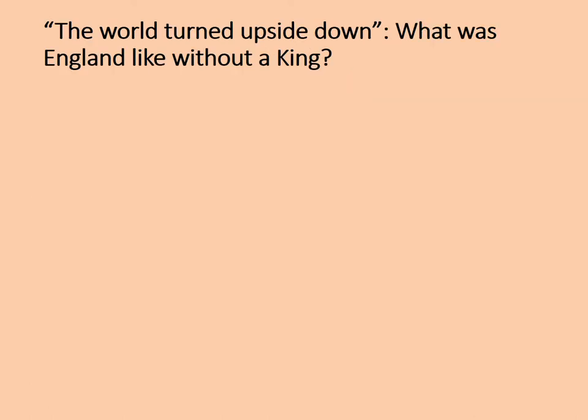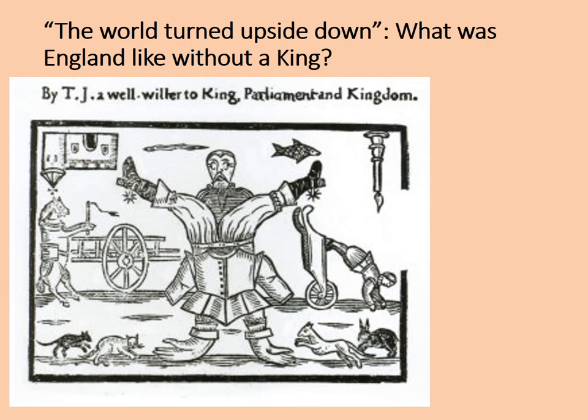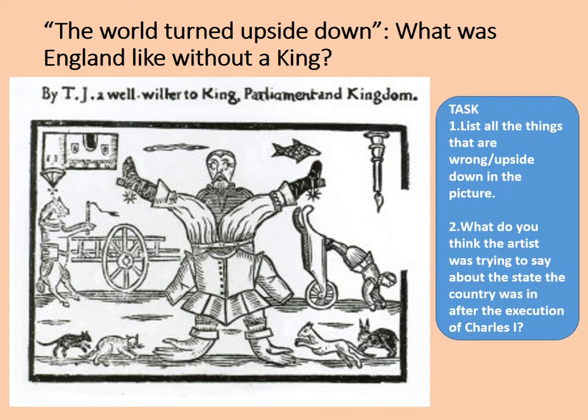We're going to look at one of my favourite historical sources: it's known as The World Turned Upside Down. What was England like without a king? For some people, when Charles I was executed and Cromwell and Parliament were increasing their power, it was as if the entire world had completely transformed. This woodcut cartoon was produced in these years, trying to communicate just how crazy things appeared. The caption at the top reads 'By TJ' — presumably this person wanted to remain anonymous — 'a well-willer to the king, parliament and kingdom.' So this person seems not to be actually taking sides.